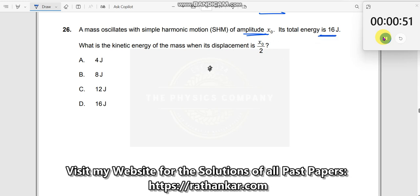When amplitude is given, how do you find out what is the total energy? Total energy is given by the formula half k a square. So in this case, a is given as X0. So I can now write half k X0 square is equal to 16.